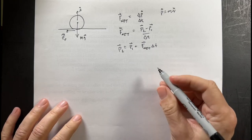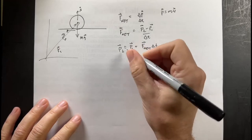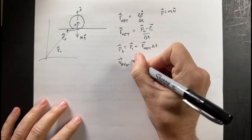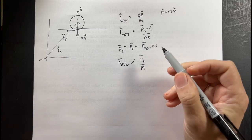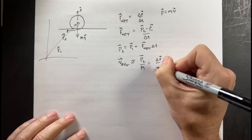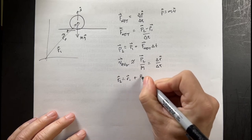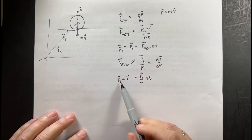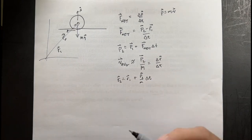I can also find the position. Let position R1 be where it starts. V_average is approximately P2/M (the final momentum), which equals ΔR/Δt. So R2 equals R1 plus (P2/M)·Δt. I find the new momentum at the end of the time interval, then the new position, and then do it all again — just move it to the next step — and animate it that way.